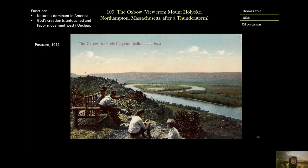One wonders: is the function of this piece to show us that nature is a dominant force in America? Is he saying that God's creation is untouched, or is he saying he's in favor of the movement West? This is unclear. Some say he is really proposing that civilization moves forward into nature and can control it, but there's also this belief that God is a big piece of the formation of nature.